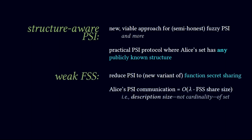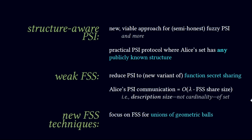In our work, we reduce this problem of structure-aware private set intersection to a new variant of function secret sharing, which we term as weak FSS. Using this framework, we reduce the PSI communication of Alice to order lambda times FSS share size, where lambda is the security parameter and FSS share size is the share size for secret sharing the structured set of Alice. This is a considerable improvement over just the cardinality of the expanded set, in the cases when the FSS share size can be really small for structured sets.